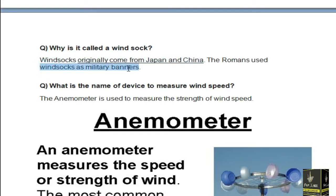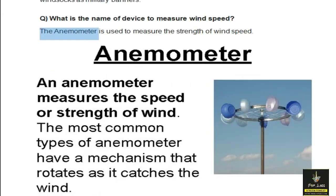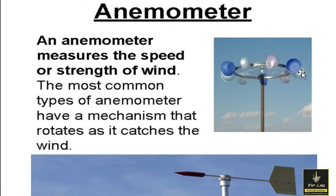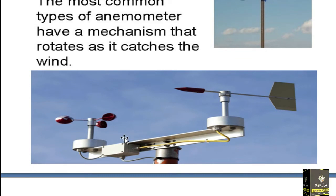What is the name of a device to measure wind speed? An anemometer is used to measure the strength of the wind. These are the anemometers which are mostly used above transformers, in airports, and in so many locations. The anemometer measures the speed and strength of the wind. The most common types of anemometer have a mechanism that rotates as it catches the wind. Wind strikes this and it rotates and it shows the speed and direction.